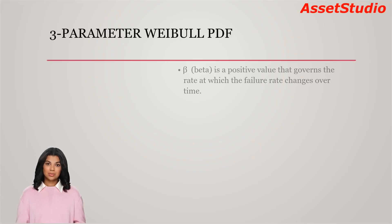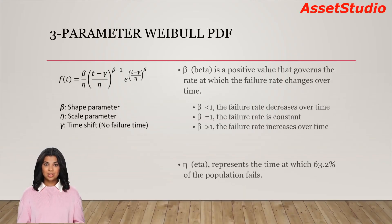The parameters of a 3-P-Weibull PDF function are beta, eta, and gamma. Beta, also known as shape parameter, is a positive value that governs the rate at which the failure rate changes over time. If beta is less than 1, the failure rate decreases over time, indicating the population is getting more stable in terms of failure as it ages.